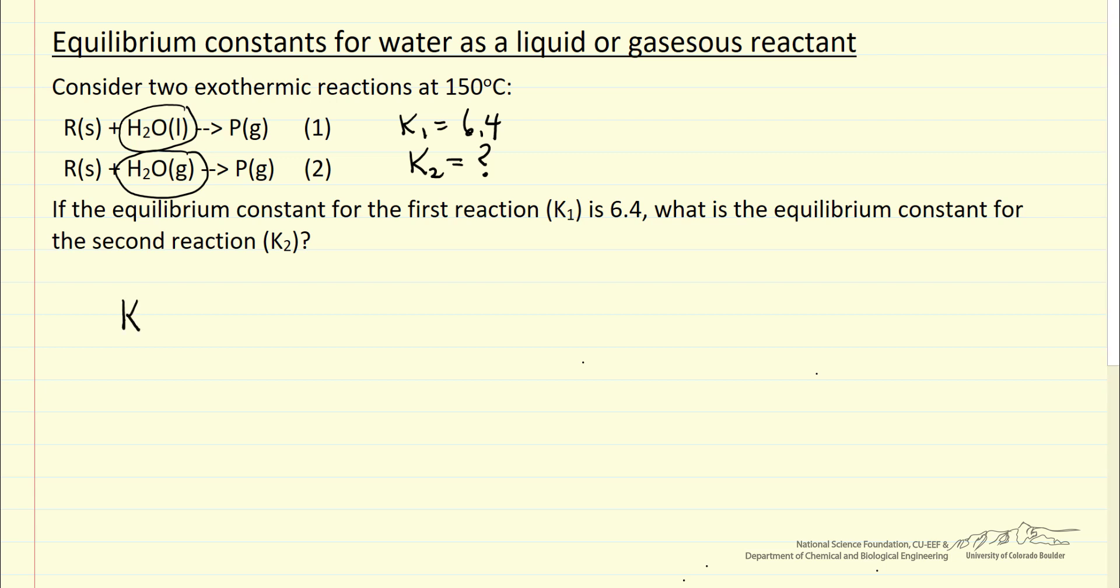So for the first reaction, equilibrium constant would be the activity of product, or the activity of R, activity of water. Of course activity is the ratio of fugacity. Product P is a gas, so it would be fugacity of P divided by fugacity. Let me write it first this way: fugacity of P at standard conditions, which in this case would be ideal gas at one bar.